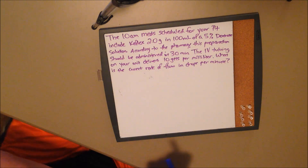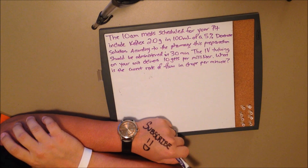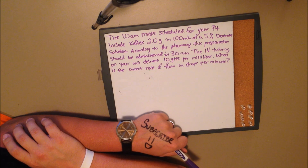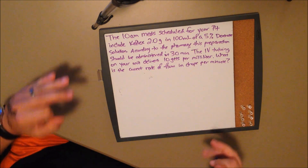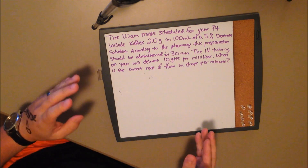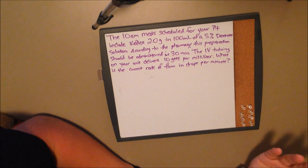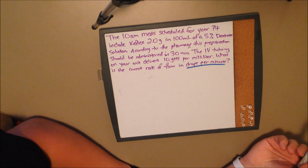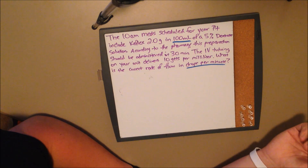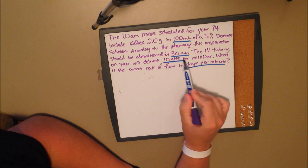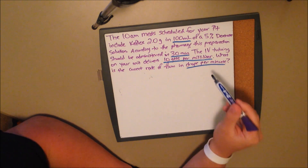Now this is a really wordy question. The 10 a.m. meds for your patient include Keflex 2 grams in 100 milliliters of a 5% dextrose solution. According to the pharmacy, this should be administered in 30 minutes. The IV tubing on your unit delivers 10 drops per milliliter. What is the correct rate of flow in drops per minute? This is a whole lot of extra filler information that is not pertinent to the question and is simply there to get you off track. What we need to worry about: drops per minute. What we have is 100 milliliters, administered over 30 minutes, and tubing that delivers 10 drops per milliliter.